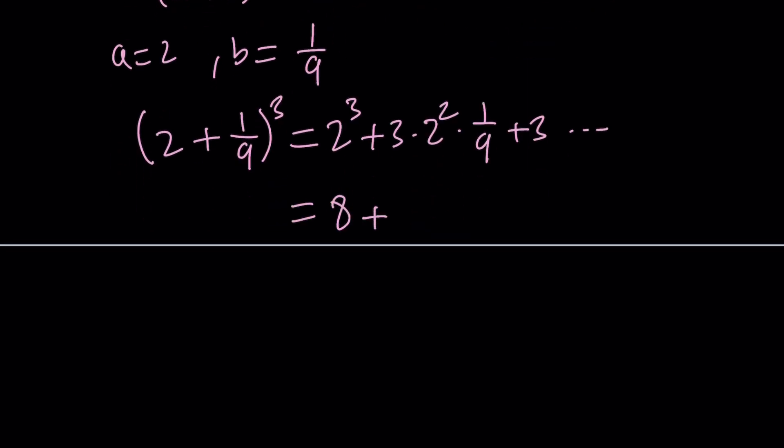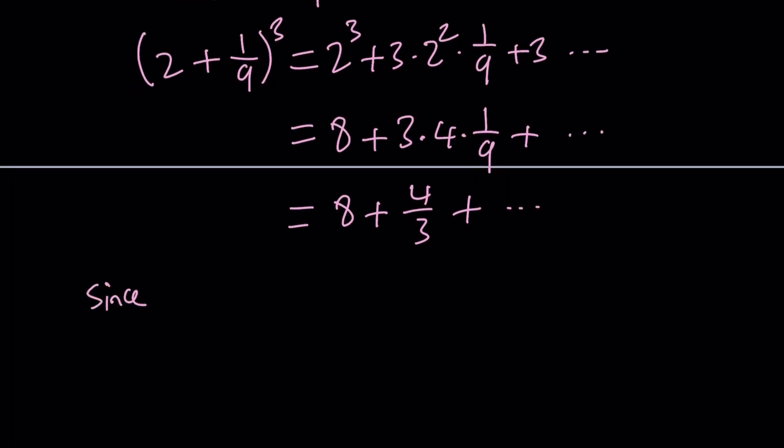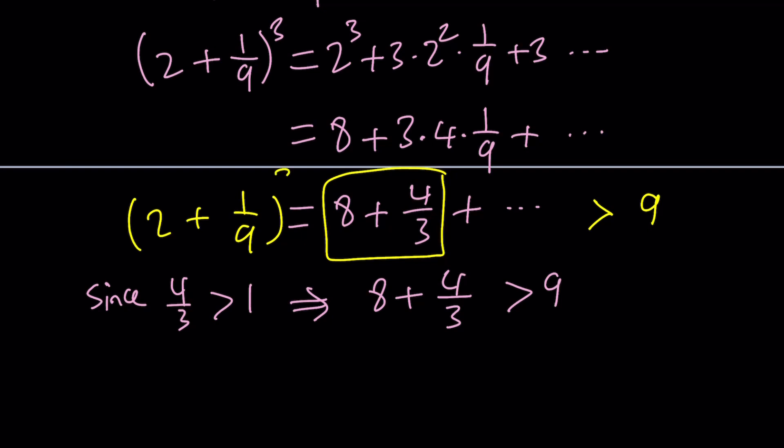2 to the third power plus 3 times 2 squared times 1 over 9, which is b, plus 3 times so on and so forth. I don't really need the other terms. Let me show you what I need. This is 8. And this is going to be 3 times 4 times 1 ninth, and that's going to be 12 ninths. And of course there's other terms. Of course everything is positive. This becomes something like 8 plus 12 over 9, which can be simplified as 4 thirds. And since 4 thirds is greater than 1, this implies 8 plus 4 thirds is greater than 9.